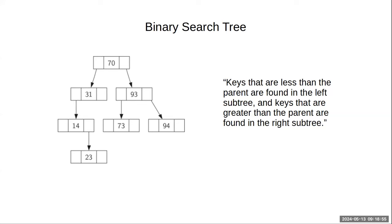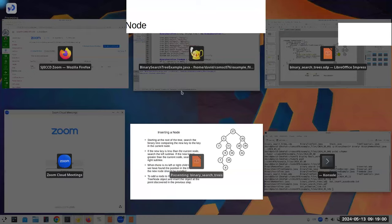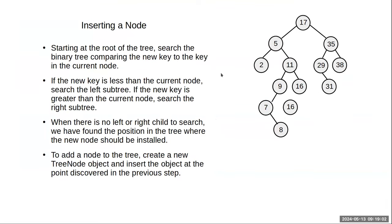We talked about inserting a node into a non-empty tree. Starting at the root, you compare the new key to the current node. For example, inserting 14: 14 is less than 17, greater than 5, greater than 11, less than 16 — so 14 would go down in that spot. When there's no more left or right child to search, that's where you put the new node.